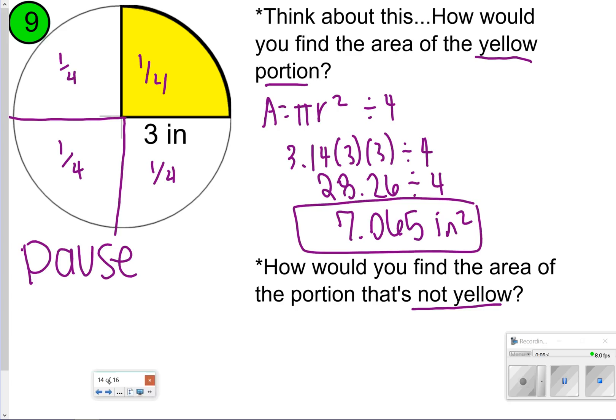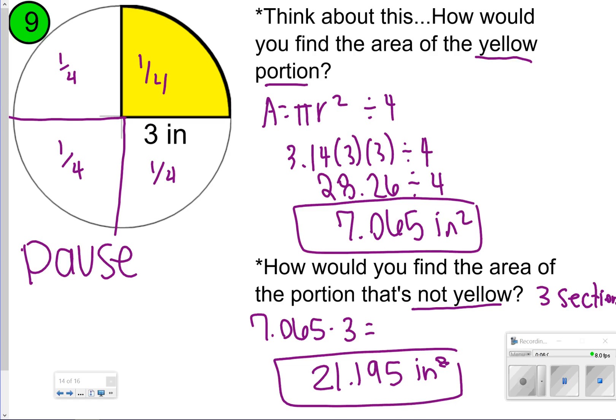The portion that's not yellow, that one is just going to be 3 of those. So maybe something I did is I took 7.065 and multiplied it by 3 because there are 3 sections of the portion that's not yellow, and I just found 1 section. If I multiply that by 3, I'm going to get 21.195 inches squared. Some of you maybe even did this: you took the area of the full circle, 28.26, and then subtracted the yellow part, minus 7.065, and you still are able to get 21.195.